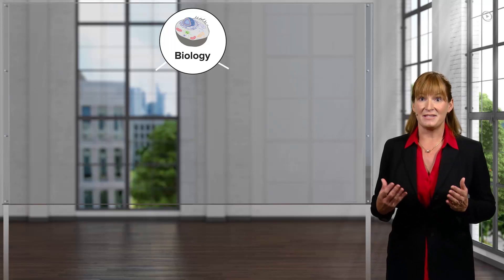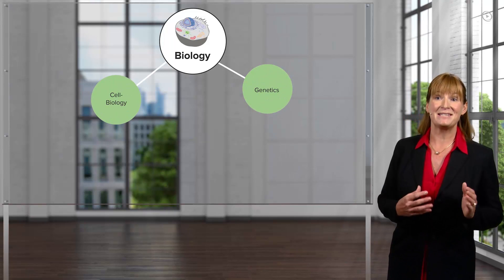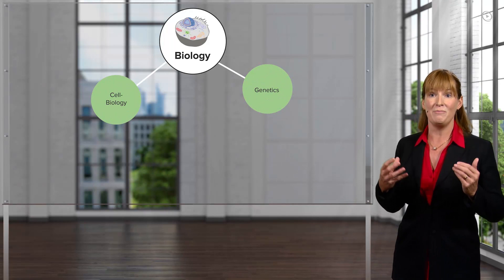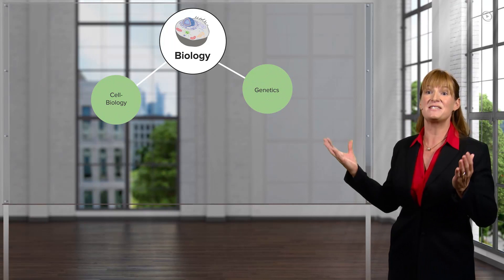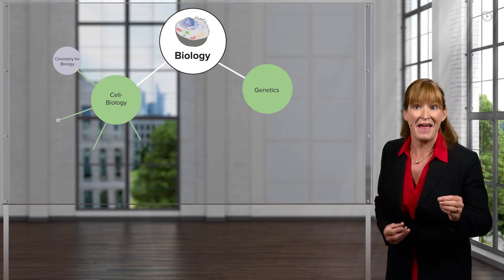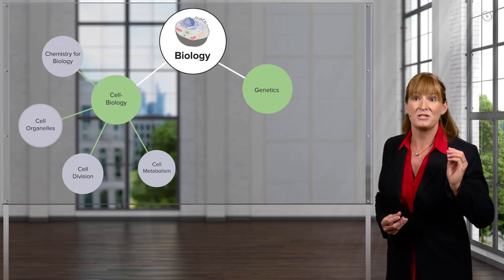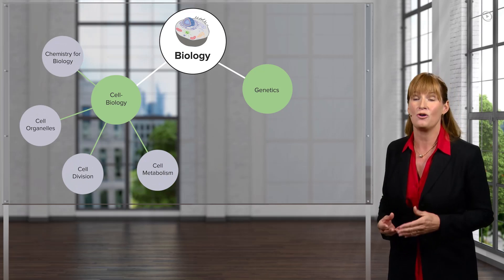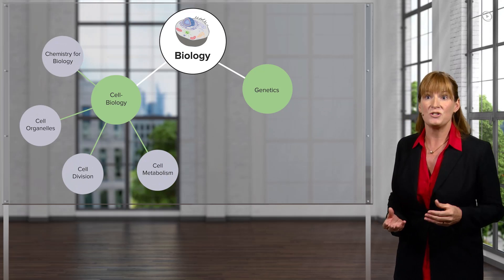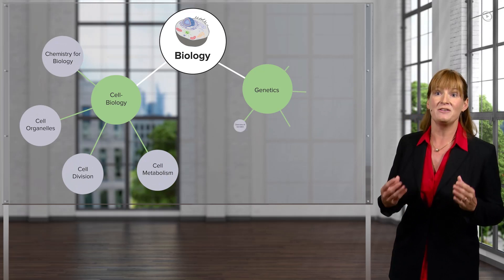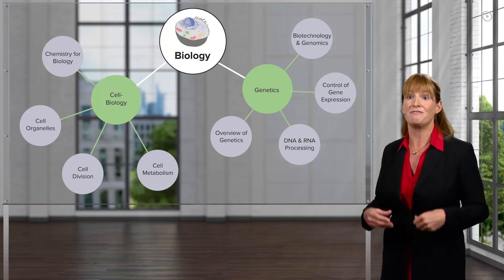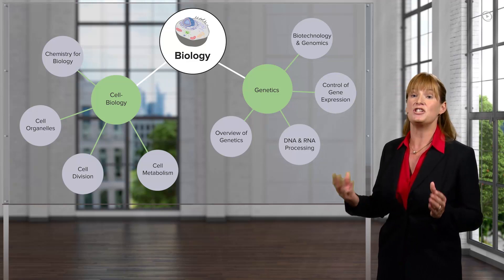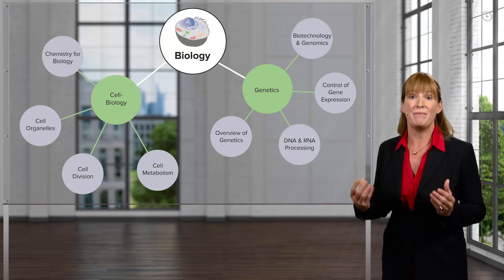I'll begin in the cell biology course with the base level of atoms and how they come together to form the macromolecules and then life itself. You can build up from there and get the most current information on cell communication and metabolic control. In the genetics course, you'll start with understanding Mendel's observations and from there you can explore the most recent work in gene expression, genomics, and biotechnology.